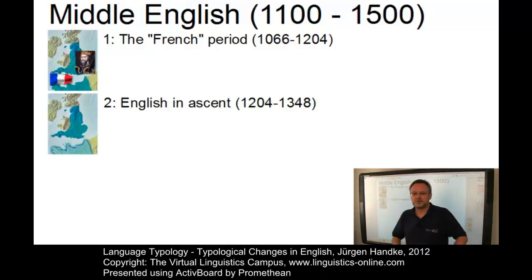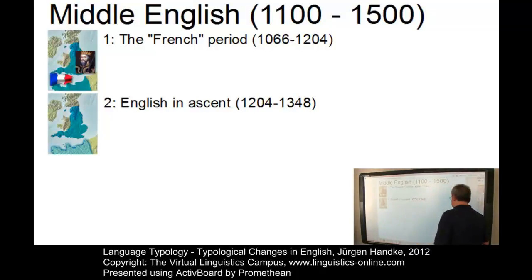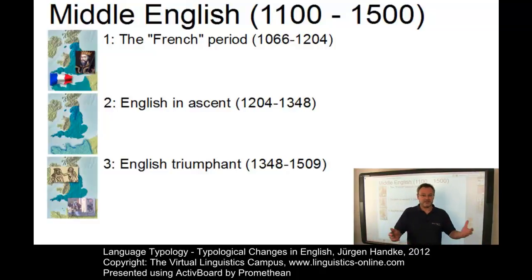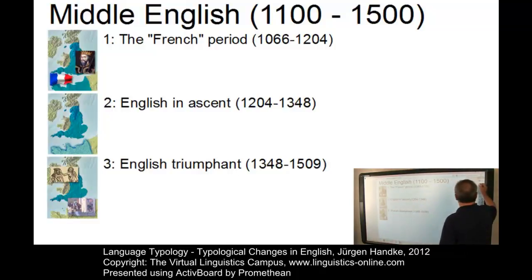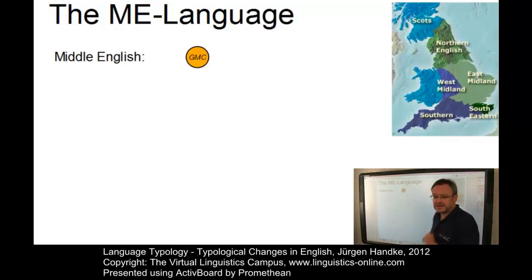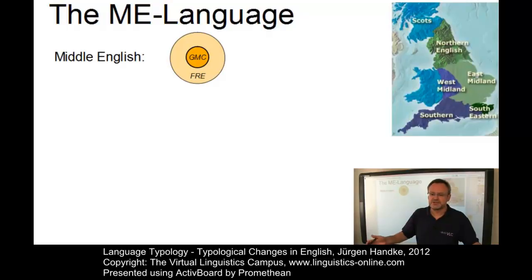It was not until the late 12th century that works in English slowly began to appear again. In the second half of the 15th century, printing was introduced by William Caxton and became the single most important factor that led to the standardization of English, based on the English spoken in London, the then center of the country. The Middle English period ends with Henry VIII's ascent to the throne in 1509. Due to Latin and French influences, Middle English was Germanic at the core but had an extensive French vocabulary extension by the middle of the 14th century.